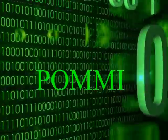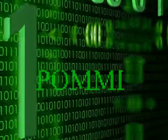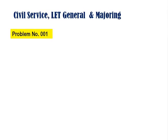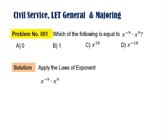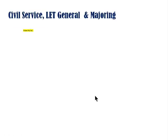Problem number 001, this is algebra. Which of the following is equal to x raised to negative 9 times x raised to 9? The choices are: A) 0, B) 1, C) x raised to 18, D) x raised to negative 18. For the solution, we apply the laws of exponents, specifically the product rule: to multiply exponential expressions with the same base, copy the common base and add the exponents. So we have x raised to negative 9 plus 9, which equals x raised to 0, which equals 1. The correct answer is letter B.